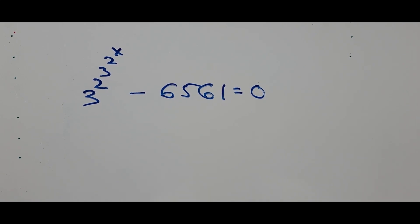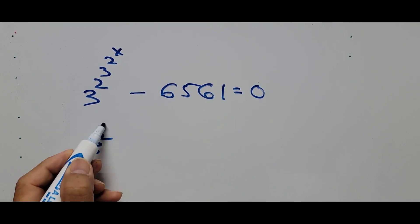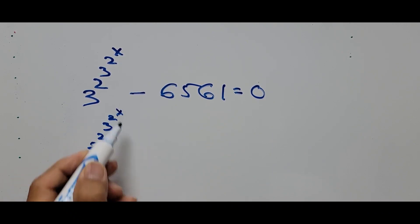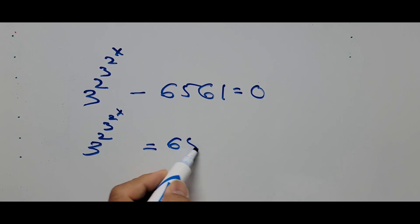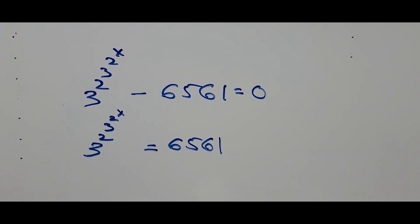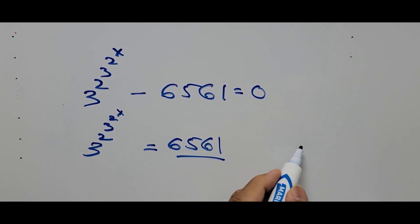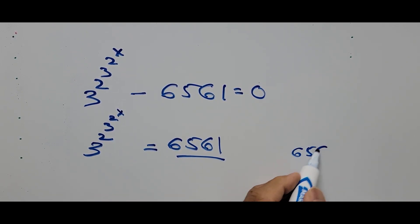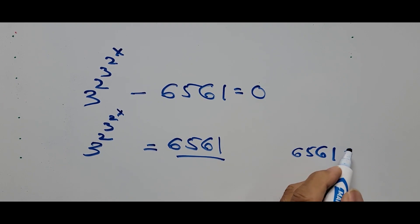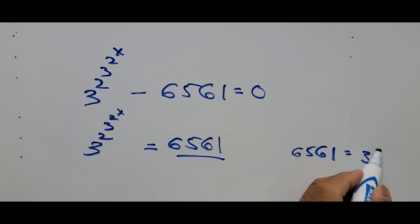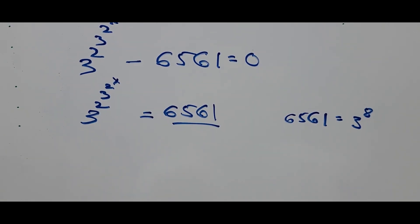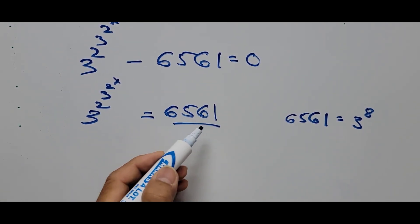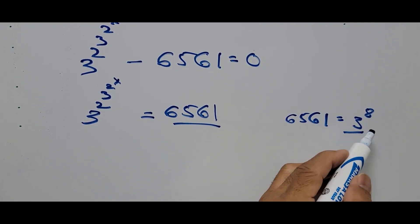From here I'm transposing the constant to the right. They will become now: 3 power 2, power 3, power 2, power x equals 6561. We focus on the right side — 6561 can be written as 3 raised to the 8th power, so we substitute that value.